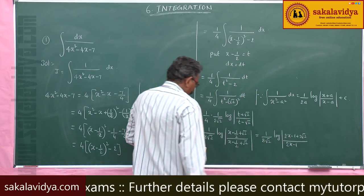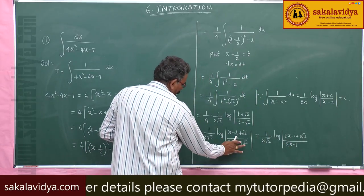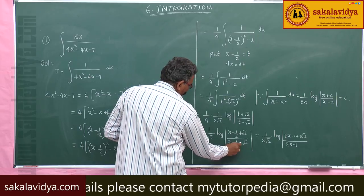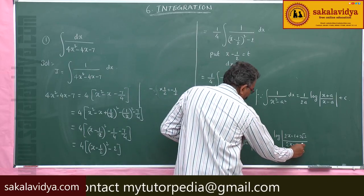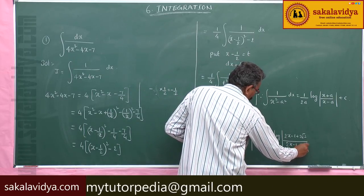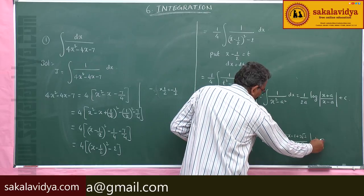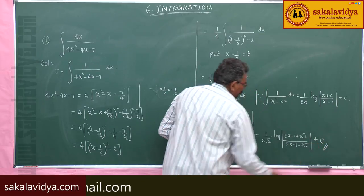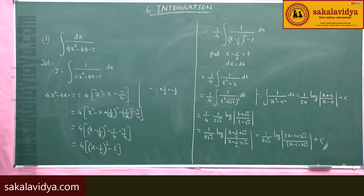The final answer is (1/(8√2))log|(2x-1+2√2)/(2x-1-2√2)| + C, where C is the constant of integration.